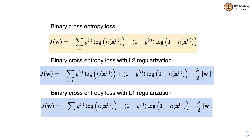We have already seen how to perform regularization in case of linear regression, and the same type of regularization can also be performed in logistic regression. There are two types: L2 regularization, where we add the second norm of the weight vector to the loss function, and L1 regularization, where we add the first norm. The norm or penalty is weighted by a regularization rate lambda.